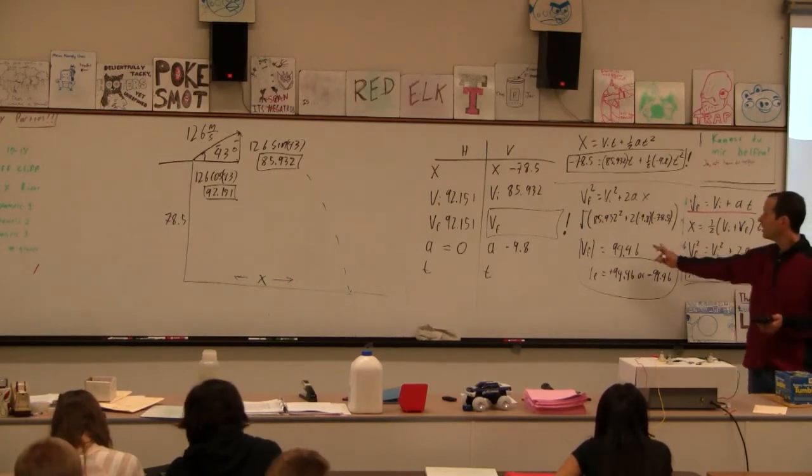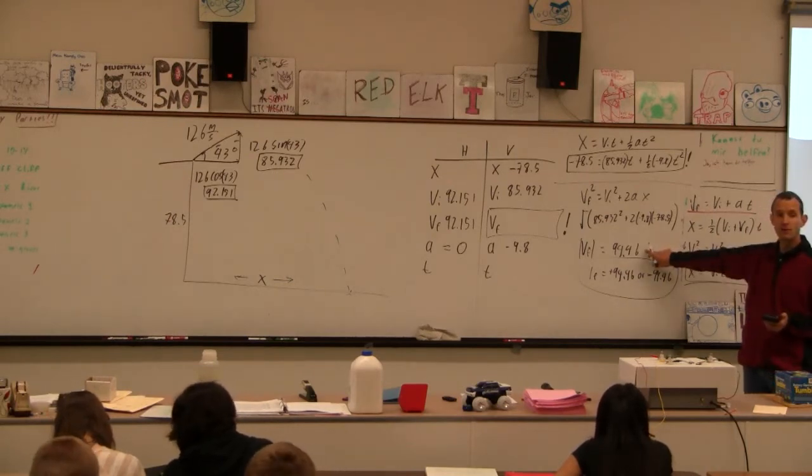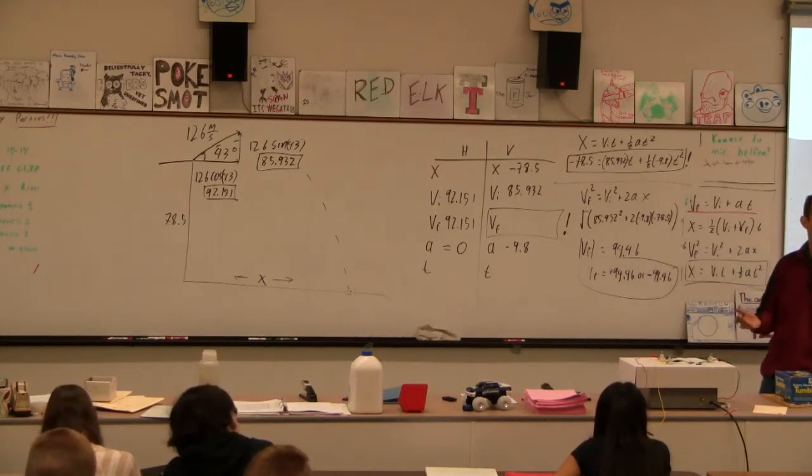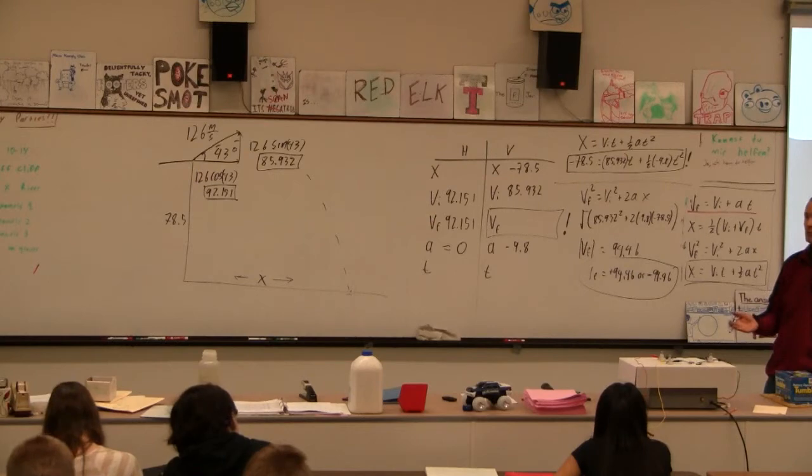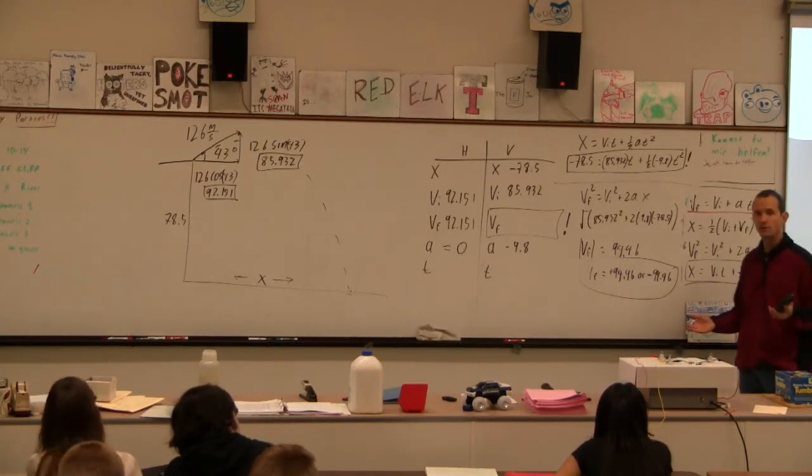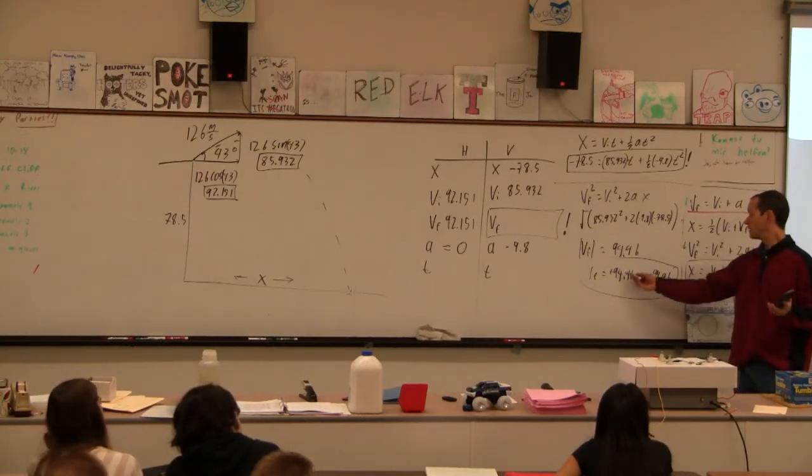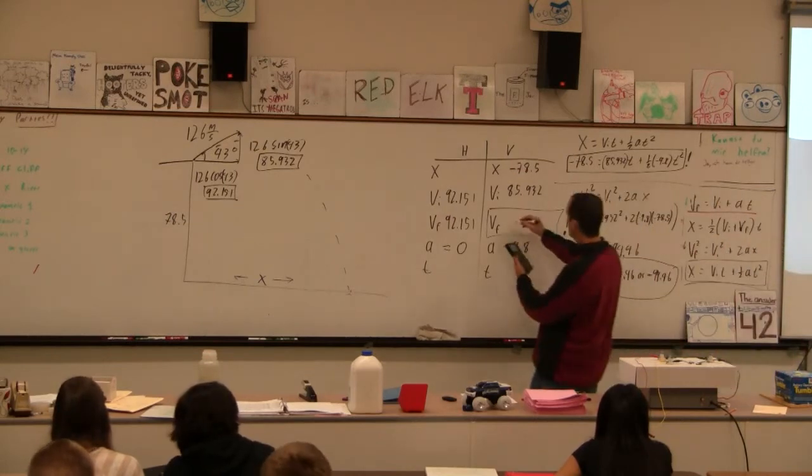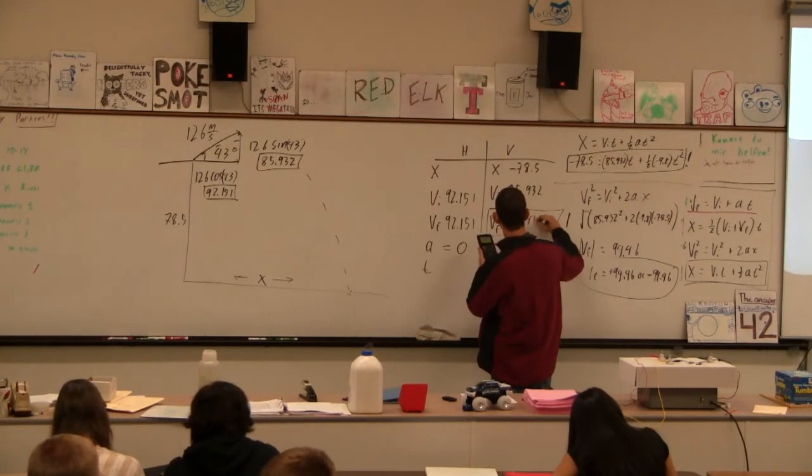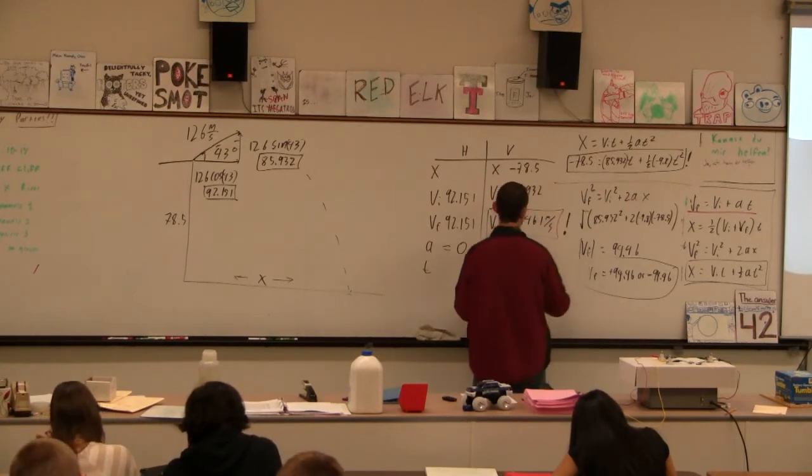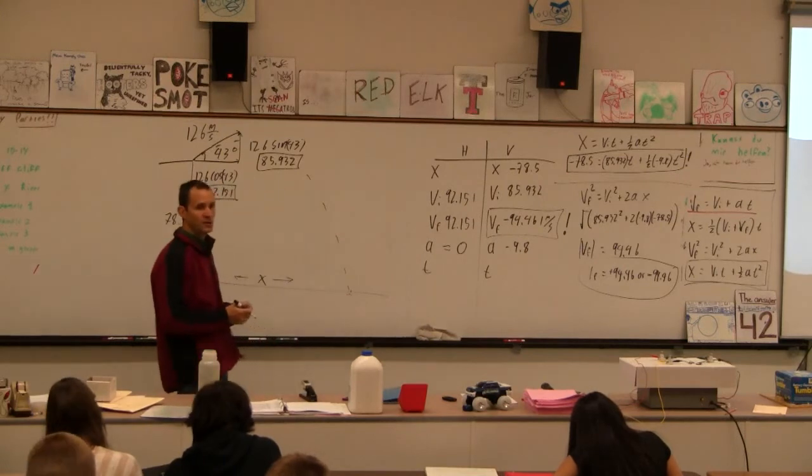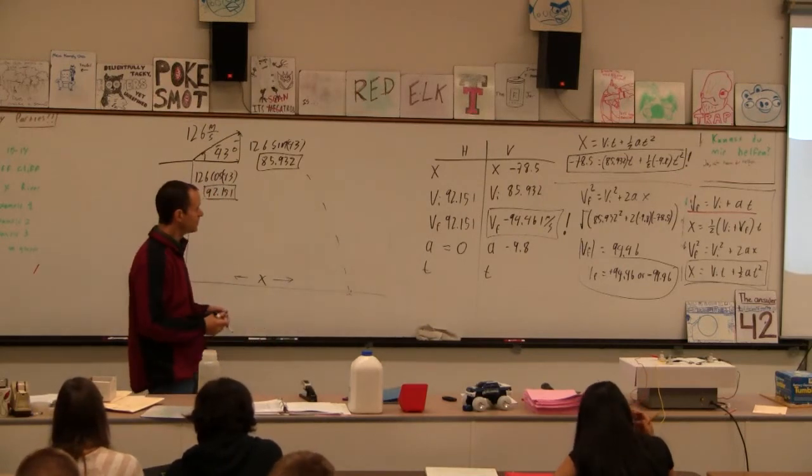Now, we just took the square root of a square, which means that the original number could have been negative, could have been positive, correct? So which one makes sense? When we hit the ground, are we going up or are we going down? Down. Down, there we go. So I'm going to put the minus 94.461, right? I'm going to put the negative in there because I know it's going down. This will make all the difference.